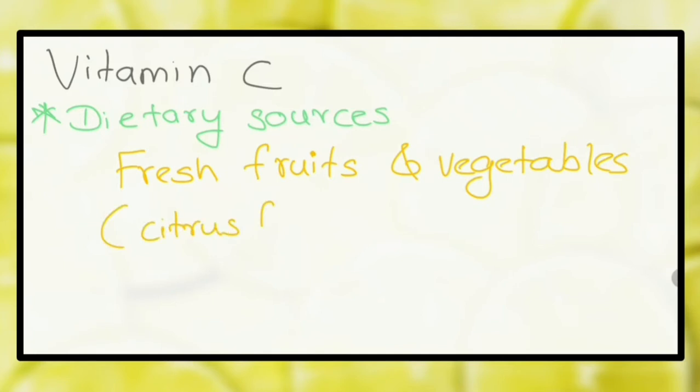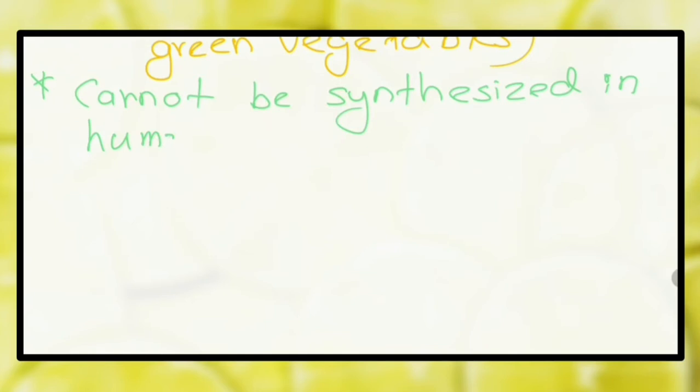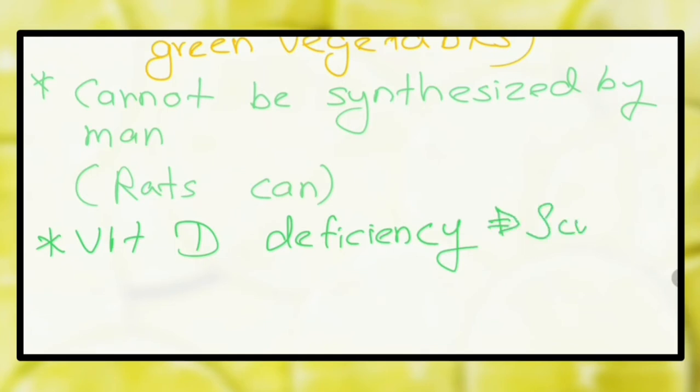What are the sources of ascorbic acid or vitamin C? Fresh fruits and vegetables. Can we synthesize vitamin C in our body? No, we can't. Tell me a condition that occurs when vitamin C is deficient. Scurvy.